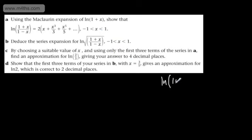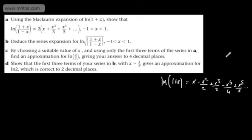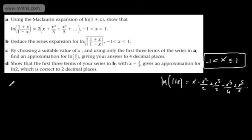What we've got is the natural log of 1 plus x. The Maclaurin expansion is x − x²/2 + x³/3 − x⁴/4 + x⁵/5 + ..., and it's valid for x strictly greater than −1 and less than or equal to +1. What we're going to do is use a log law on the quotient. We can express the log of a quotient as a difference, so we can write ln((1+x)/(1−x)) = ln(1+x) − ln(1−x).